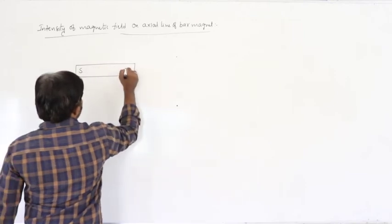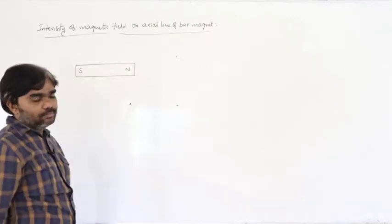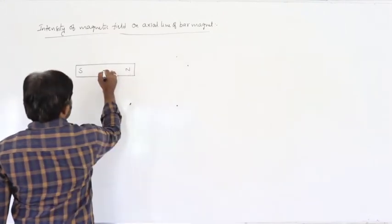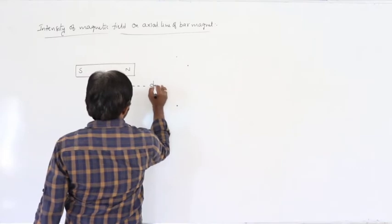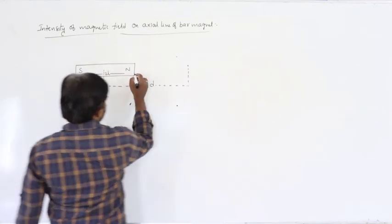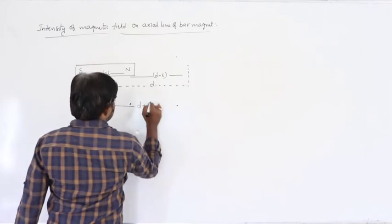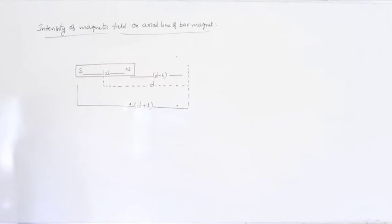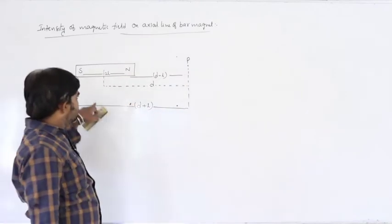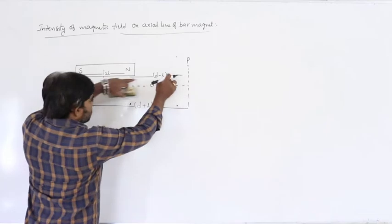Consider a bar magnet with south pole and north pole. The line passing through both poles is called the axial line. Let a point P be at distance d from the center, and let the length of the magnet be 2l. Then the distance from the north pole to P is (d − l), and from the south pole to P is (d + l).